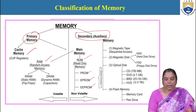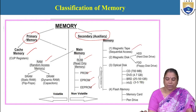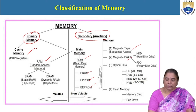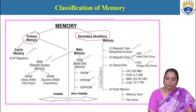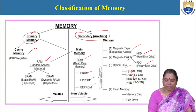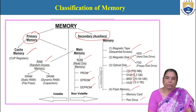The secondary or auxiliary memory includes a variety of devices: magnetic tape, magnetic disc (further classified into hard disk drive and floppy disk drive), optical disc (categorized into CD, DVD, BRD, and HVD), and flash memory (including memory cards and pen drives). We will look into the basic features of these devices in this video.